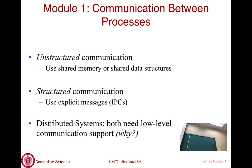When talking about communication between two processes—whether on the same machine or different machines—there are two kinds: structured and unstructured. Unstructured communication involves using memory buffers to pass information between processes. For example, you might have a shared memory region on a machine that multiple processes can read or write to. That's an implicit form of communication.